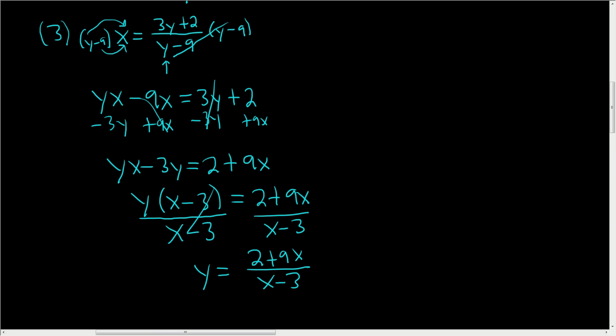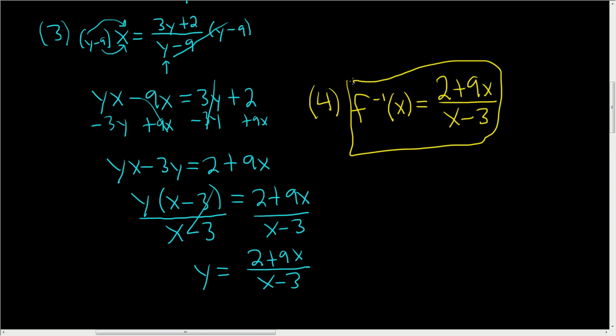The fourth step is writing it down with the correct notation. So f inverse of x equals 2 plus 9x divided by x minus 3. And that is the final answer. I hope this helps.